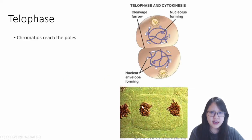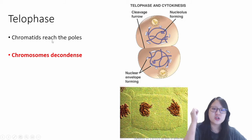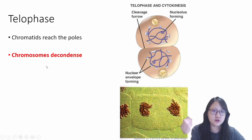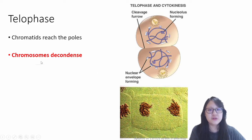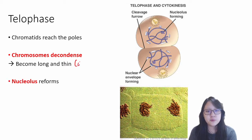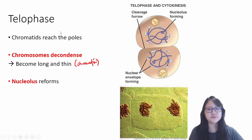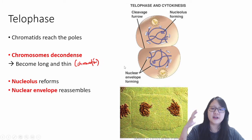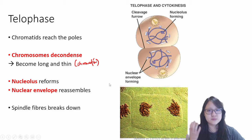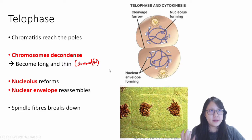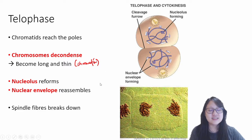At telophase, the chromatids have reached the poles. When they reach the poles, the chromosomes start to decondense — they return to long and thin chromatin form. The nucleus reforms, the nuclear envelope reassembles, and the spindle fibers break down. Basically, telophase is everything opposite of prophase — it's ending the process.